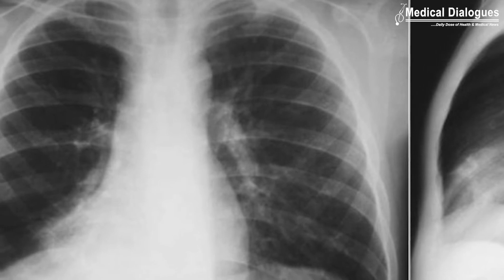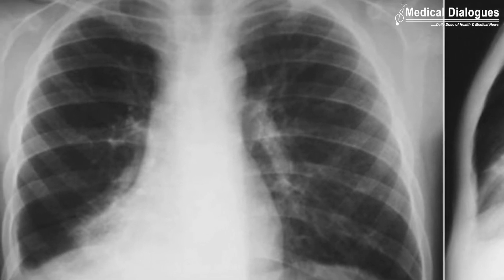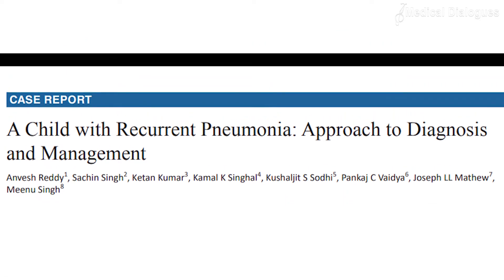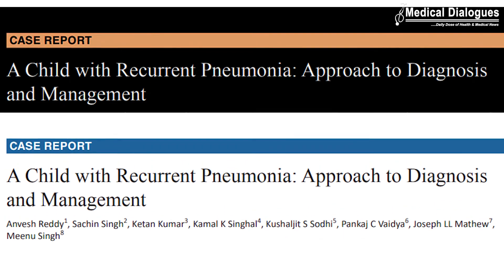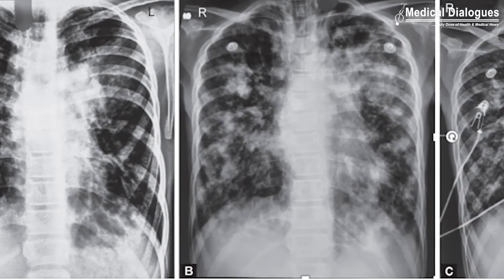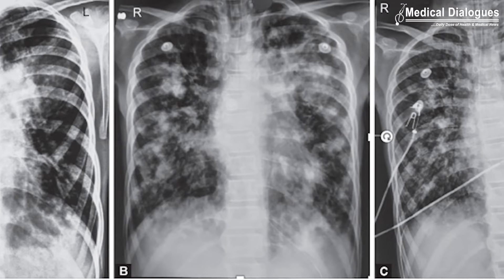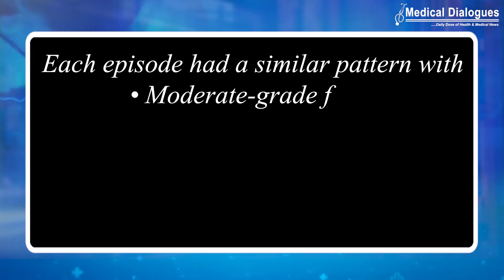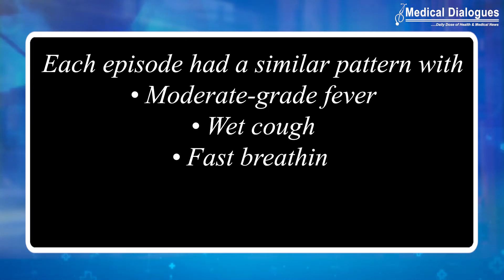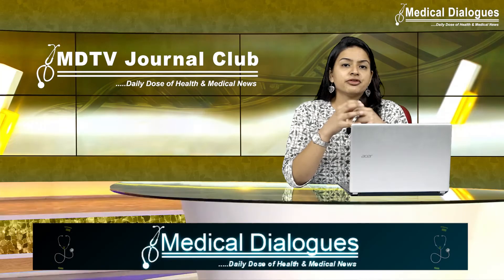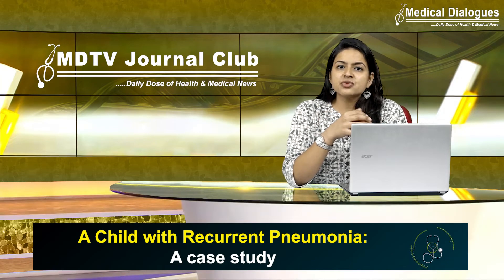With radiographically documented clearing between the episodes, a study in the Journal of Postgraduate Medicine Education and Research describes a case of an 11-year-old girl who presented with a history of recurrent episodes of fever, cough, and rapid breathing since the age of five. Each episode had a similar pattern with moderate grade fever, wet cough, fast breathing, and requirement of oral antibiotics for resolution.